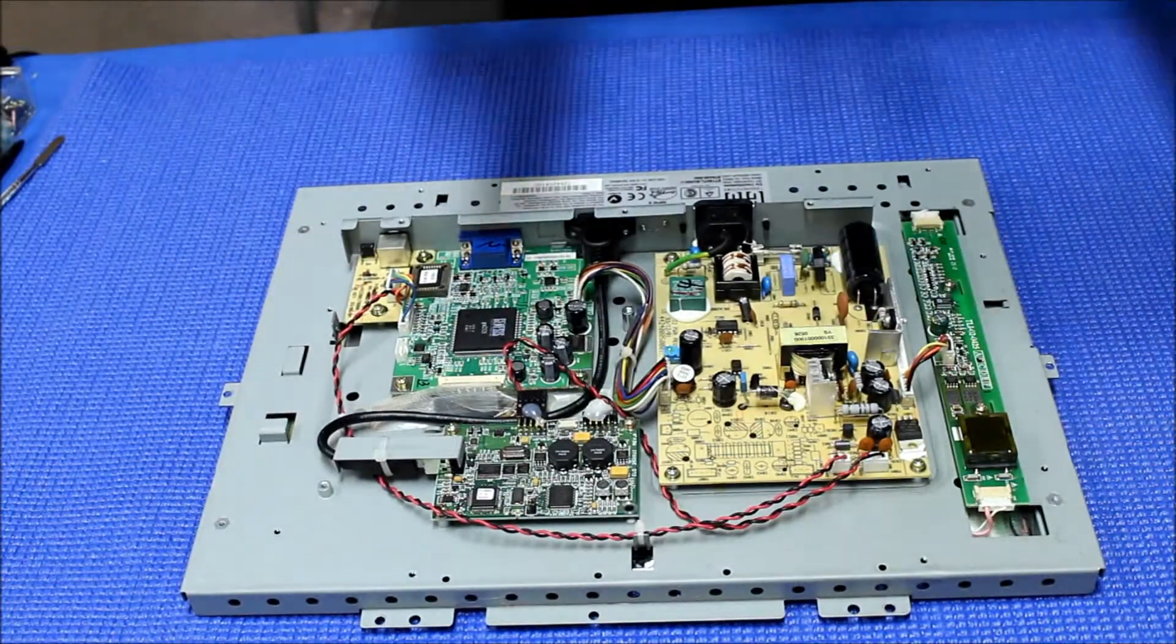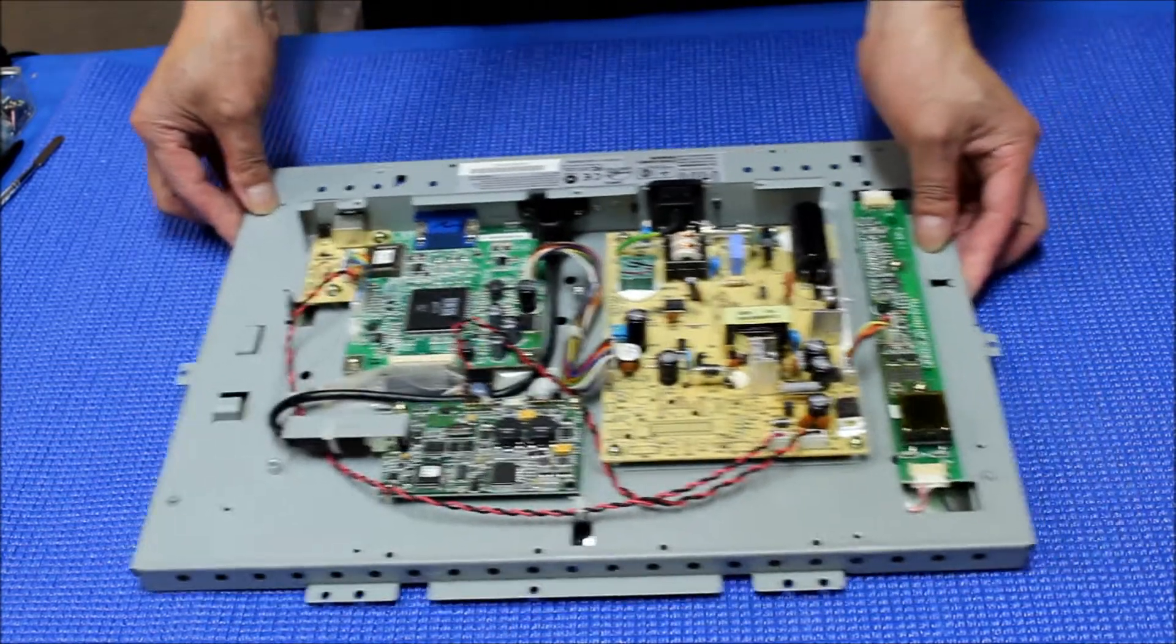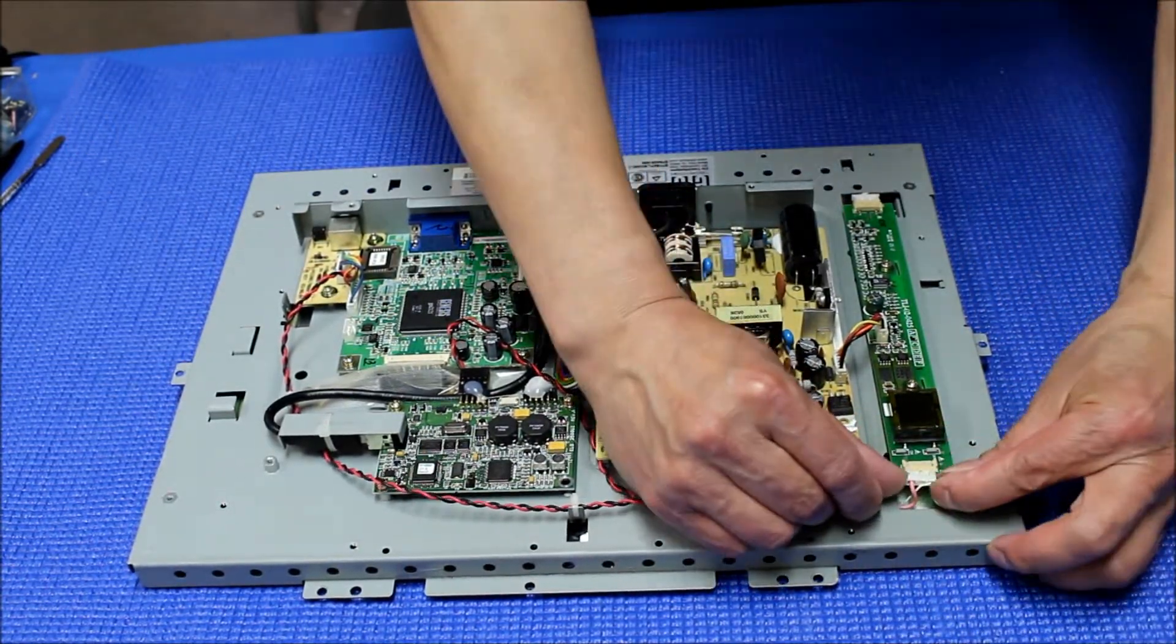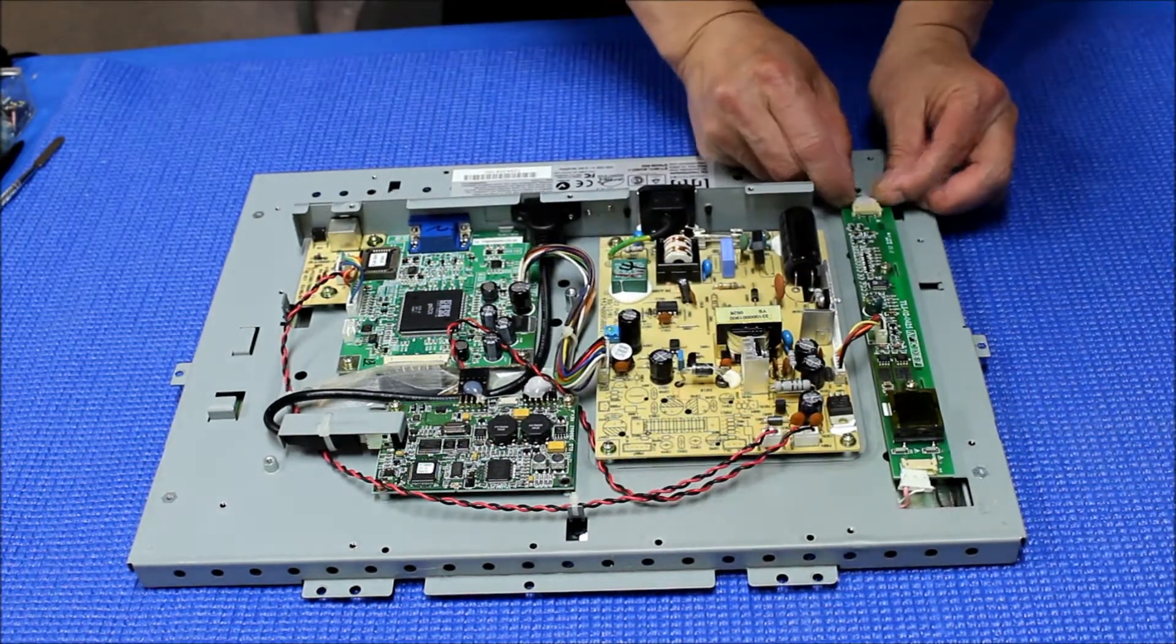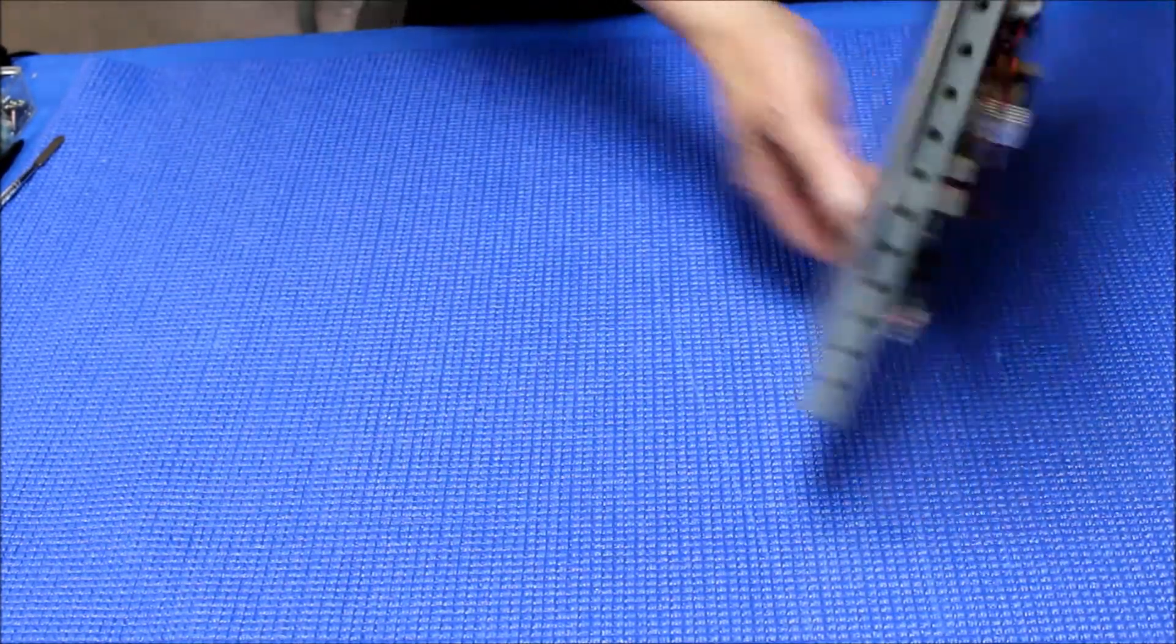Set the touchscreen and covers aside. Next thing we need to do is disconnect the backlight connections. See this? Then you're going to flip it over like this.